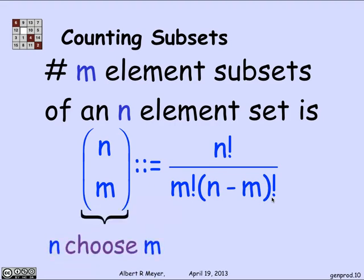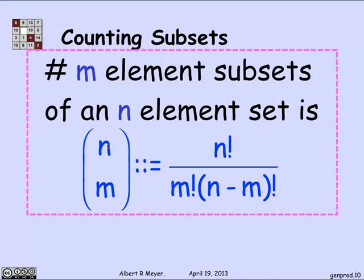And again, that notation, the binomial coefficient is called N over M is N choose M. And this is an absolutely fundamental formula that you need to remember, because we will be using it constantly and repeatedly.